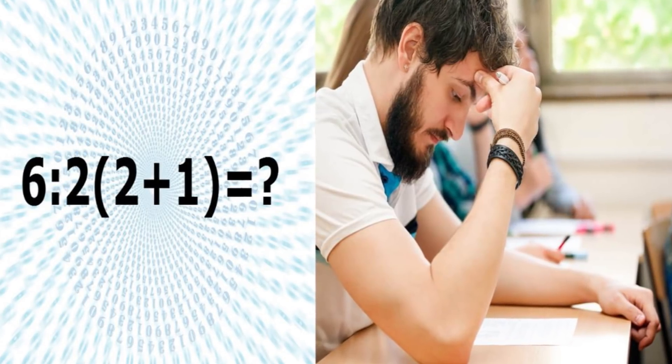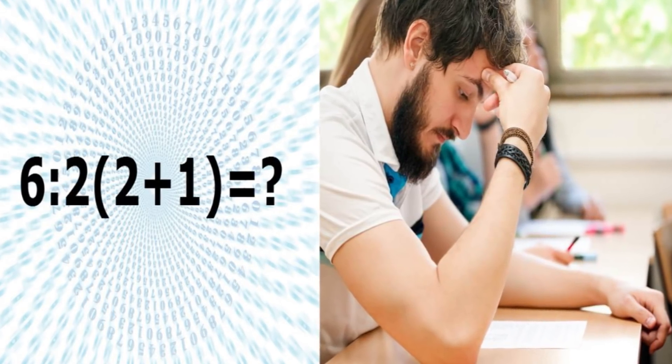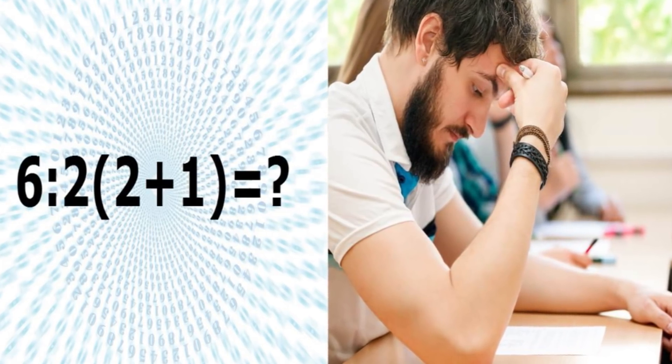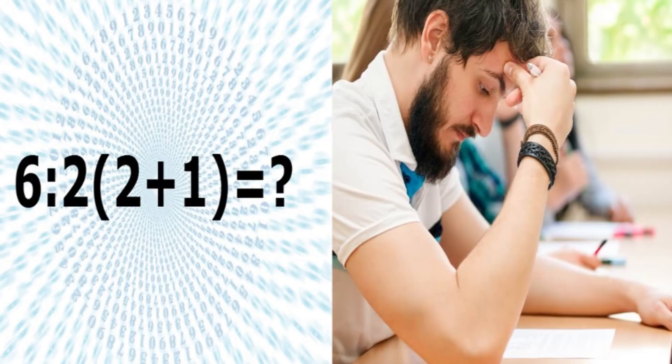Since only 1 in 1,000 people was able to solve this equation correctly, you're in good company if you got it wrong. You and 999 others got the same answer. The wrong answer. If you did get the answer correct, you deserve to celebrate. You remembered the order of operations and you were able to apply it to get the answer correct. You are 1 in 1,000.